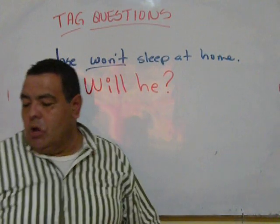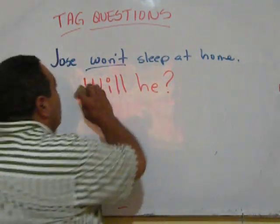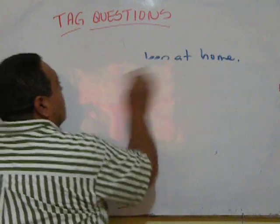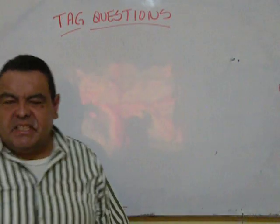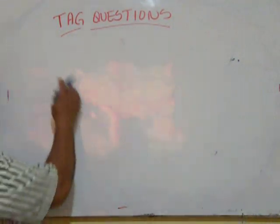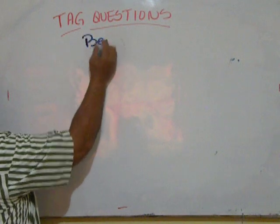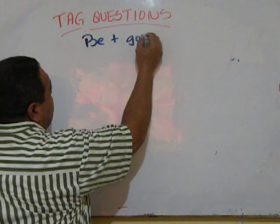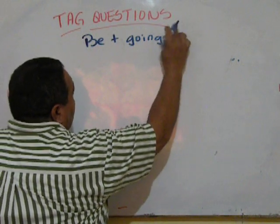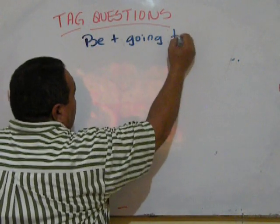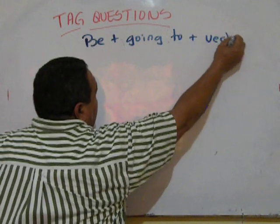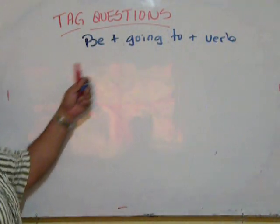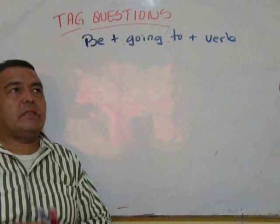And this is the same for the rest of the people. Now, this is the easiest part, but the other part is easy too. For example, future with be. Remember? We can express the future with be. We have to add going to plus the verb.